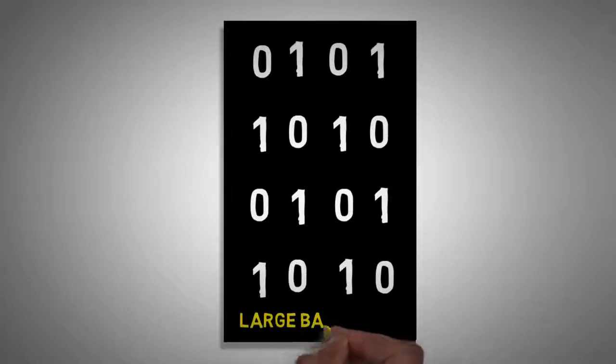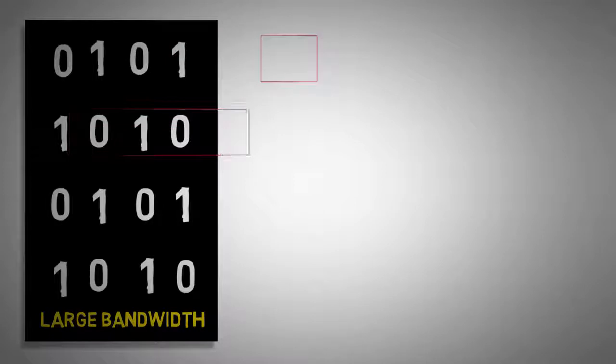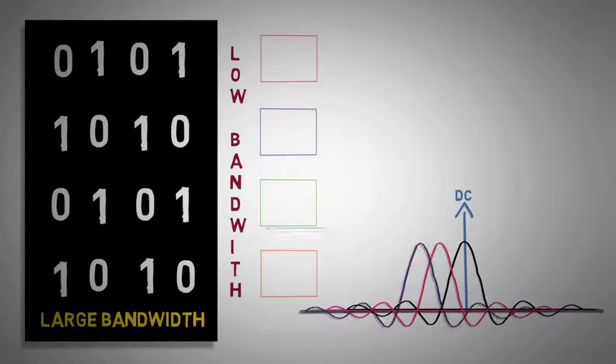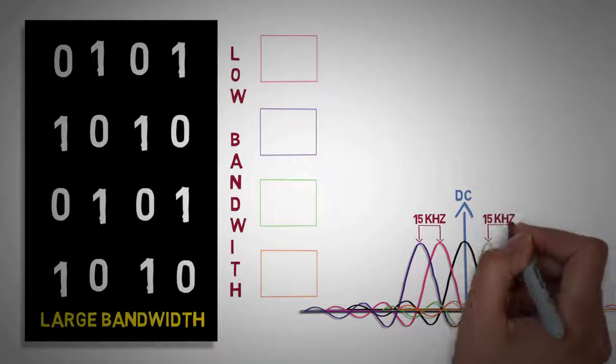In OFDM, high-speed data streams of large bandwidth are split into parallel, slower sub-streams of lower bandwidth called sub-carriers. These sub-carriers are centered around frequencies and multiples of 15 kilohertz on both sides of DC.